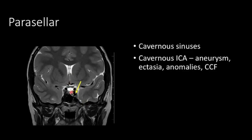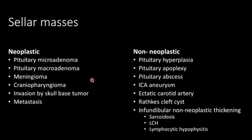Lateral to the sella is the parasellar region, where we see the cavernous sinuses and the flow void of the cavernous ICA. For example, if the left cavernous ICA flow void is markedly enlarged compared to the right, the differentials of aneurysm, ectasia of the ICA, or carotico-cavernous fistula should be considered.